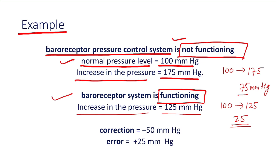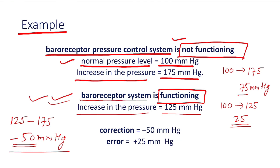So in this example, what is the correction? When the baroreceptor system is functioning, the pressure increases to 125 mmHg. The correction is minus 50 mmHg — when the baroreceptor system is functioning, this system decreases pressure by 50 mmHg. That is why the correction is minus 50 mmHg.